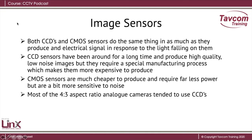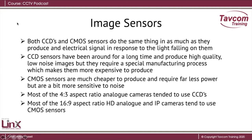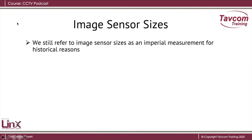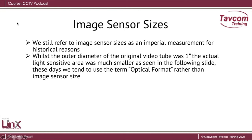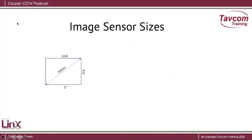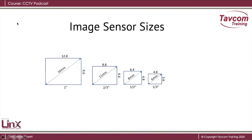Most of the 4 by 3 aspect ratio analog cameras tended to use CCDs. Most of the 16 by 9 aspect ratio HD analog cameras and IP cameras tend to use CMOS sensors. We still refer to image sensor sizes as an imperial measurement for historical reasons. Whilst the outer diameter of the original video tube was one inch, the actual light sensitive area was much smaller. These days we tend to use the term optical format rather than image sensor size. So a one inch video tube would produce a light sensitive area of 12.8 by 9.6 millimeters, giving us a diagonal of 16 millimeters. Then we had two thirds of an inch tubes, then half inch tubes, and about that time we changed to solid state sensors, giving us a third inch. The four examples here are all shown as a 4 by 3 aspect ratio, but of course these days a lot of our image sensors are 16 by 9 in the widescreen format.